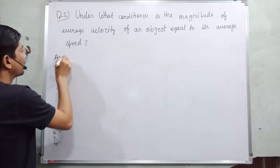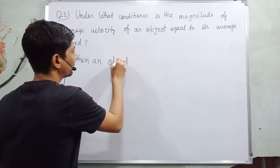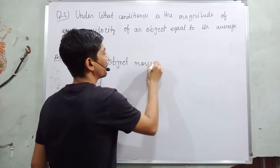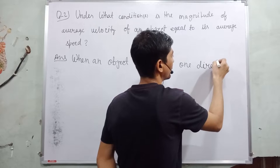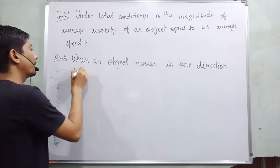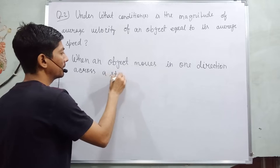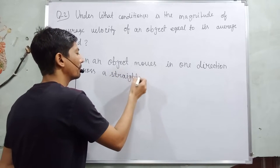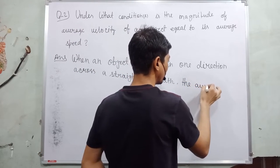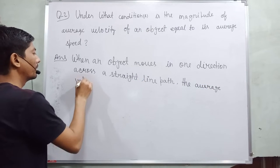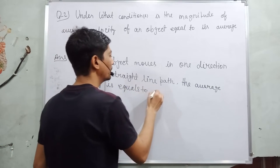So, the answer will be: When an object moves in one direction across a straight line path, then average velocity is equal to average speed.